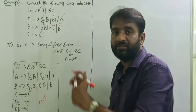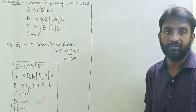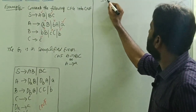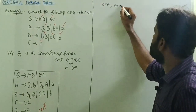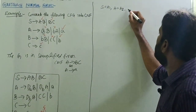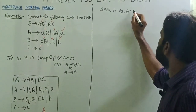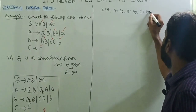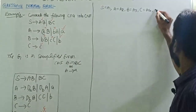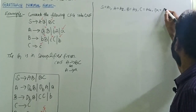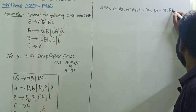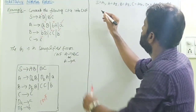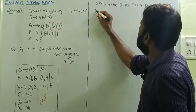Now convert this grammar into the Greibach Normal Form — that is our question. We rename the variables: S equals A1, A equals A2, B equals A3, C equals A4, DA equals A5, DB equals A6.